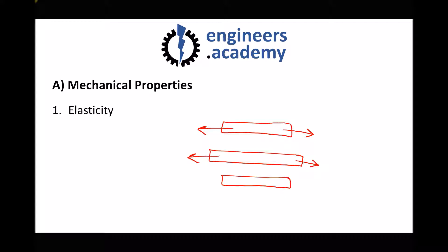The opposite of elasticity is called stiffness. Elastic materials stretch and return, whereas stiff materials are very resistant to stretching or elastic deformation.